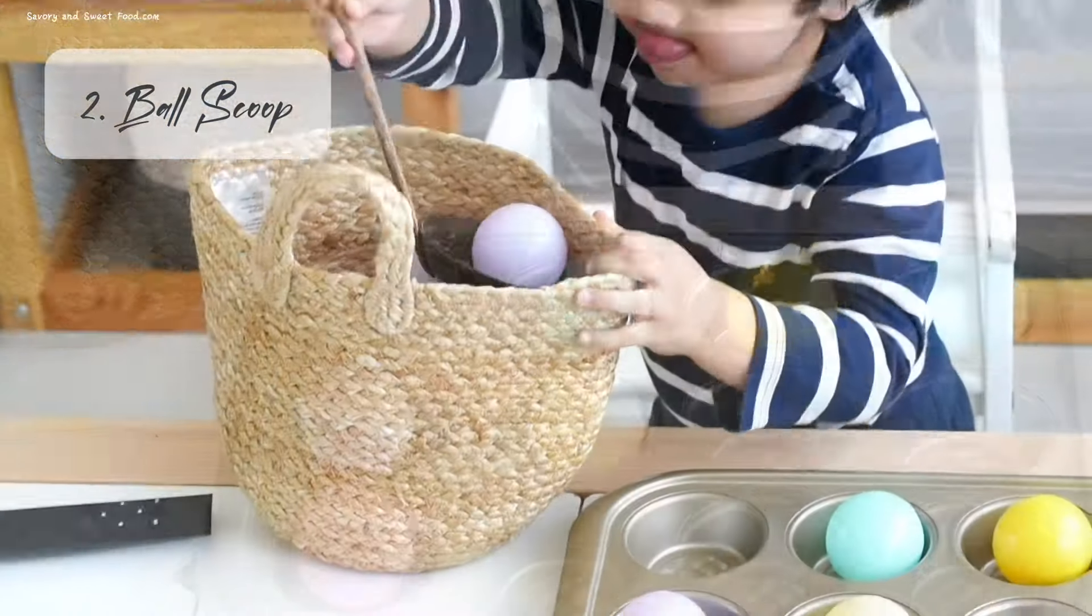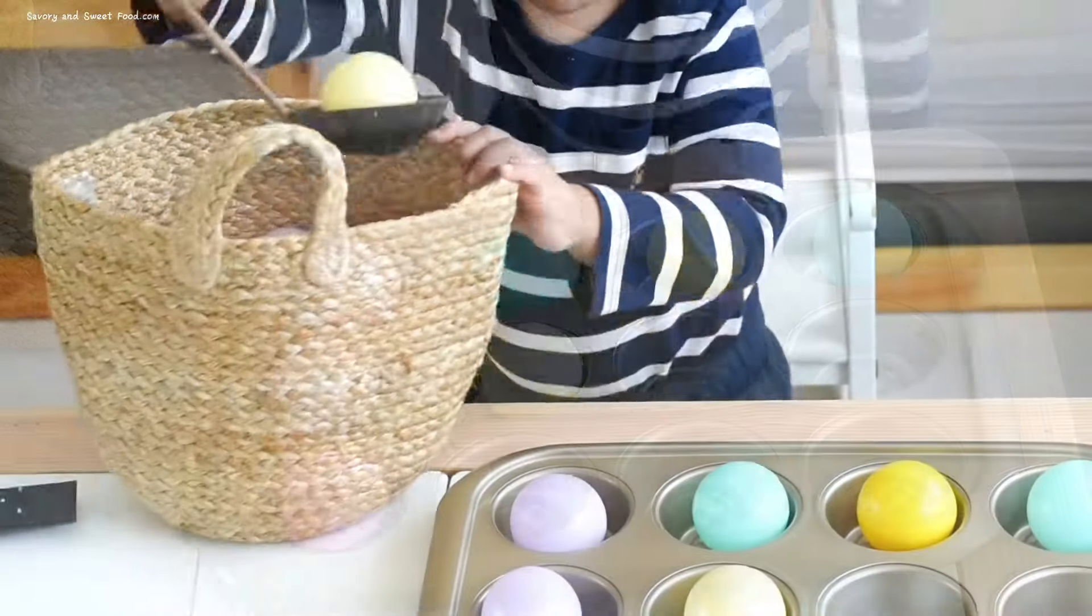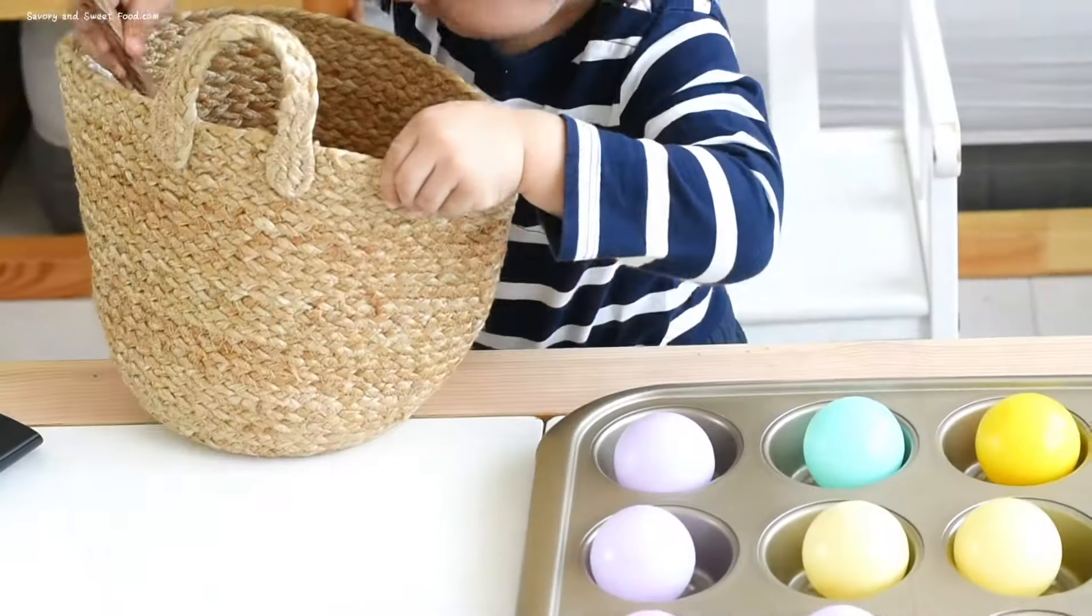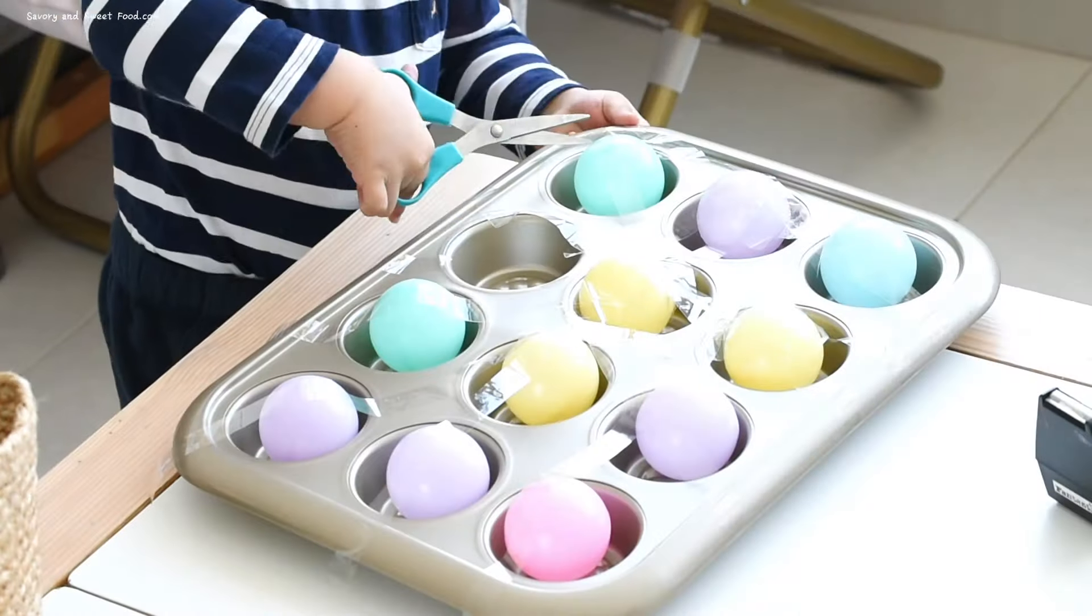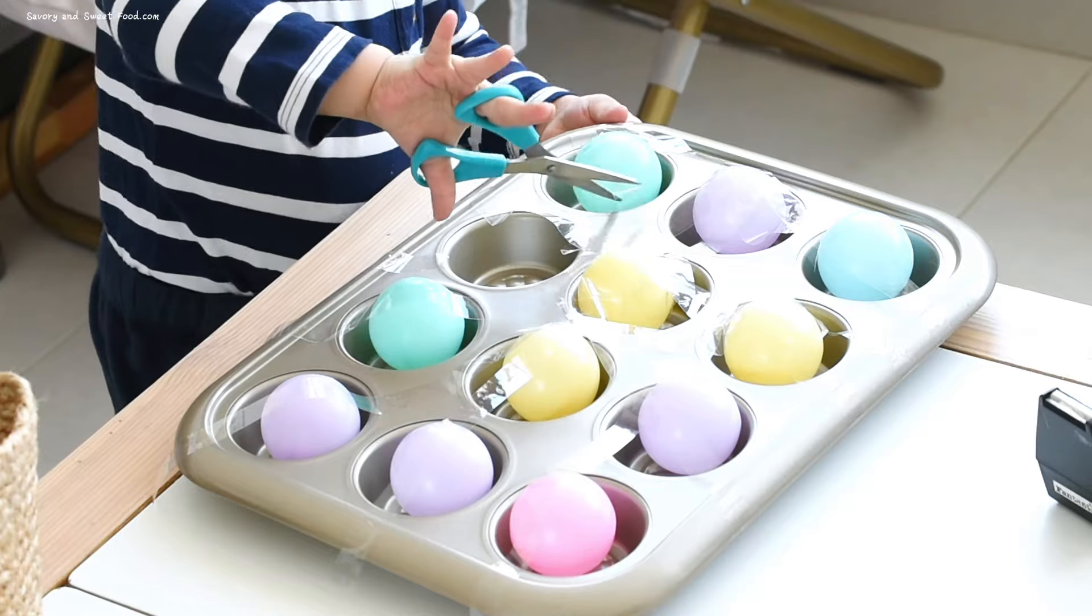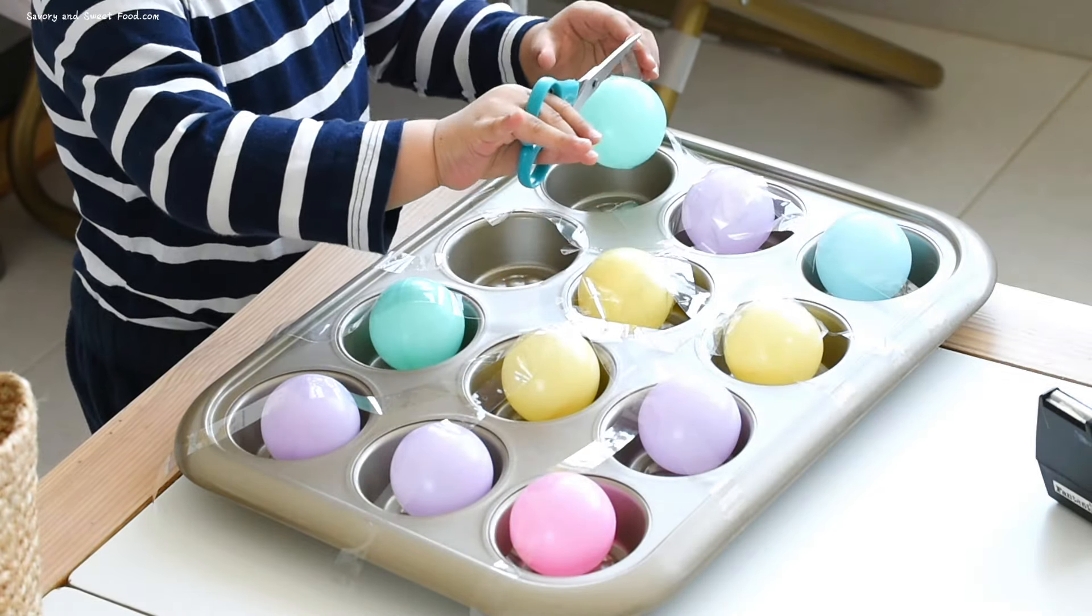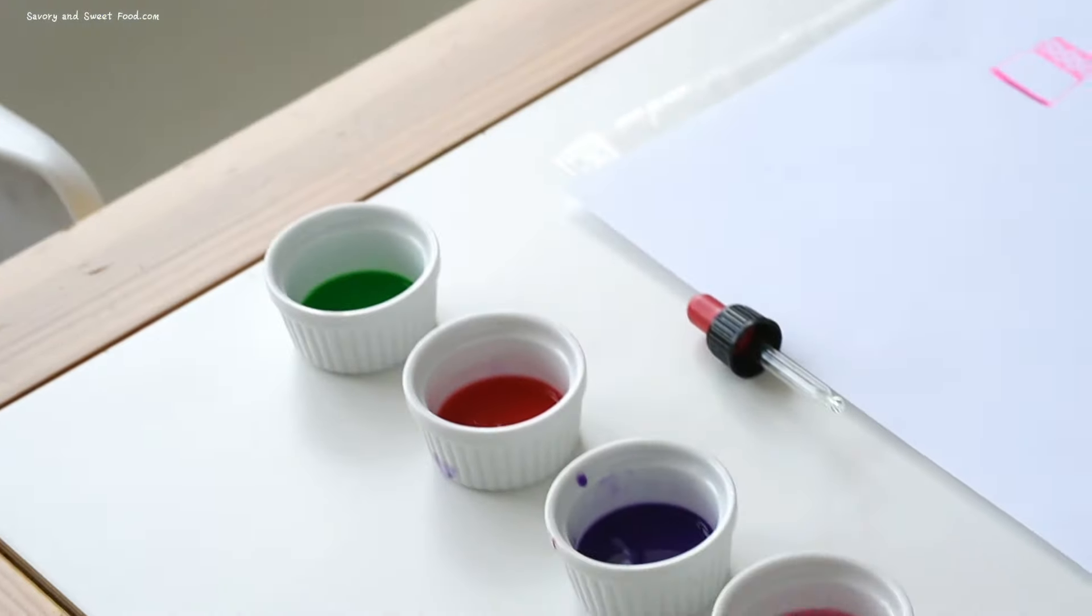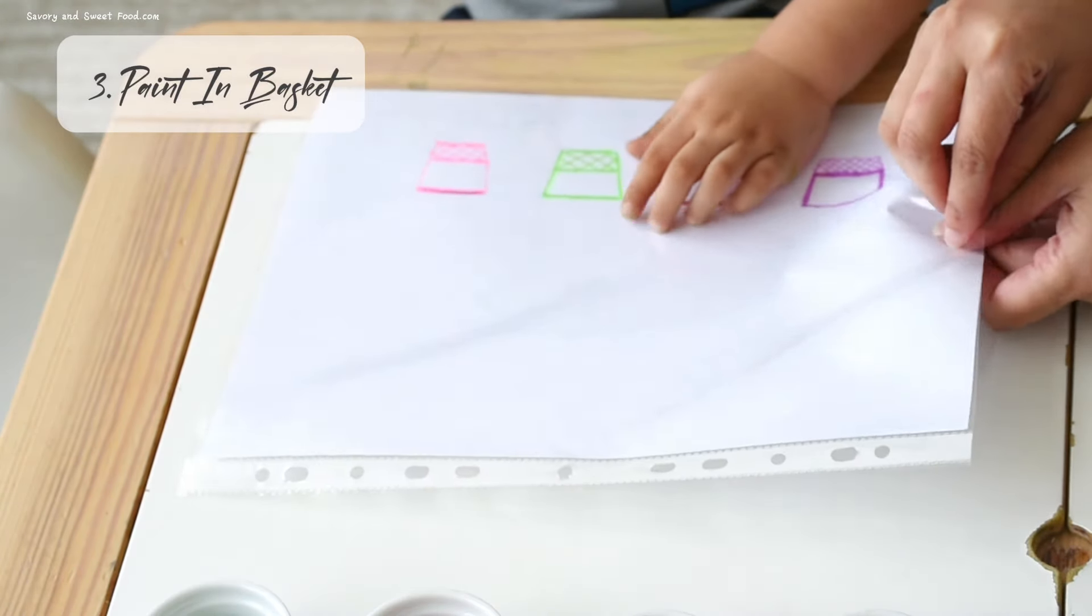Continuing the fun, we switched gears with a cupcake pan challenge. He had to use a spoon like a scoop to transfer the balls from the basket and aim for each cupcake depression inside the pan. I then taped the balls inside the cupcake pan and handed him a pair of scissors. He had to rescue each trapped ball by cutting and freeing them from the pan.